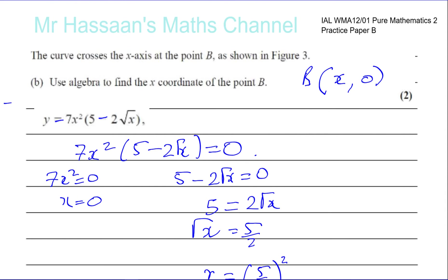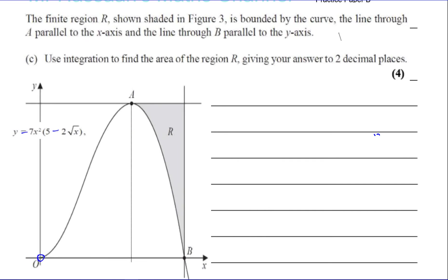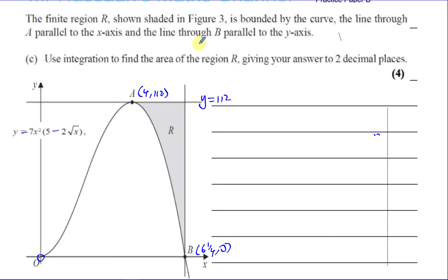For part C, we use integration to find the area of the finite region R shown in figure 3, bounded by the curve through A and the line through A parallel to the x-axis, and the line through B parallel to the y-axis. Point A is at (4, 112), so that horizontal line is y equals 112, and B is at x equals 25 over 4, so the vertical line is x equals 25 over 4.